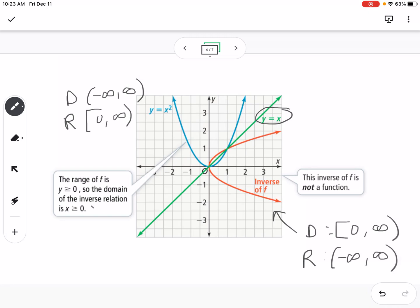Okay, but we need to note that while this is an inverse, it's not an inverse function because the red graph, the red parabola on its side does not pass the vertical line test.